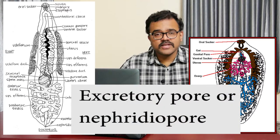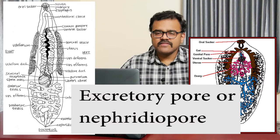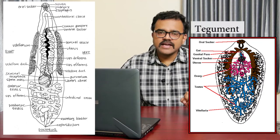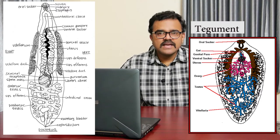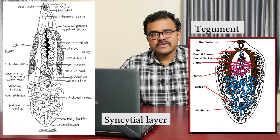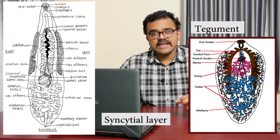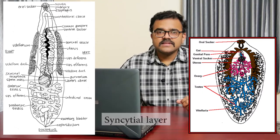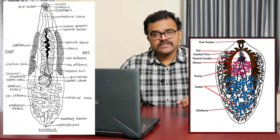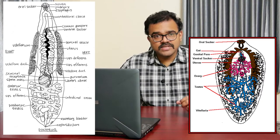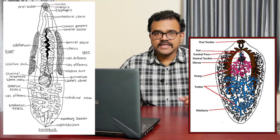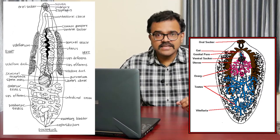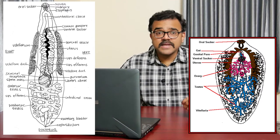The body is covered by a tegument, a peculiar kind of epidermal arrangement. The tegument consists of a syncytial layer and an inner layer where the main cell bodies are found. The tegument serves the functions of protection, excretion, and gaseous exchange. Beneath the tegument are circular, longitudinal, and oblique muscles.